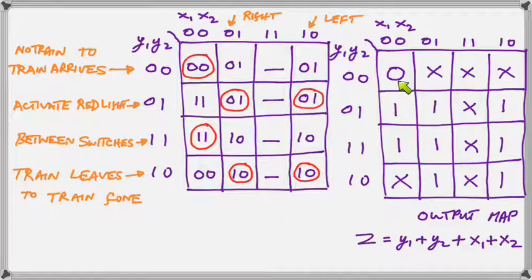For everything else the red light must be on and you will say to me but why didn't you put ones in everything else? Well we don't really care in the one condition because it can never occur so the correct thing is when you don't know put an X.